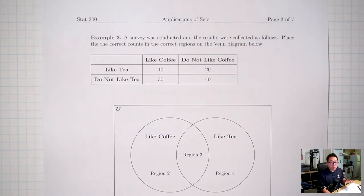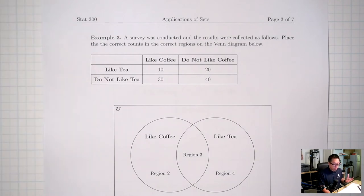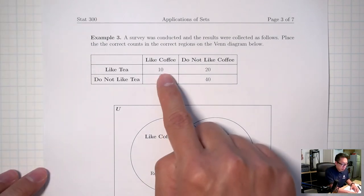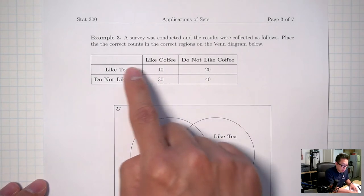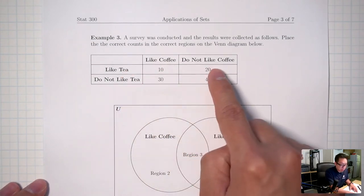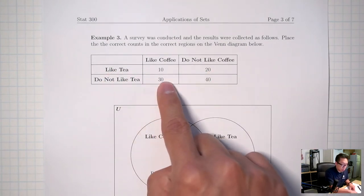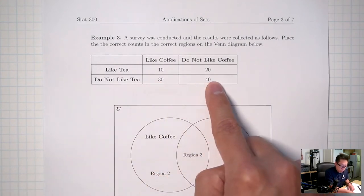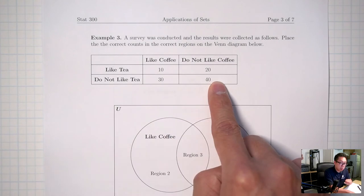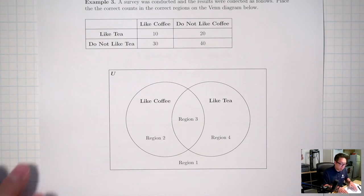Example 3. This example is the same idea as the first two, but I'm giving you the clues in the form of a table. These 10 people like coffee and at the same time like tea. These 20 people do not like coffee but like tea. These 30 people like coffee but don't like tea. These 40 people don't like coffee and don't like tea — they don't like anything.